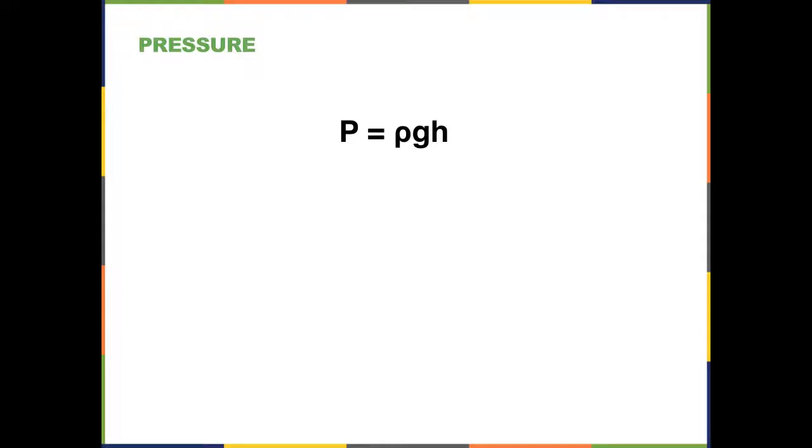Now we're going to begin the second section talking a little bit more about pressure. Another way to express pressure in addition to force per unit area is a combination of the mass density, gravity, and height of the column of fluid.